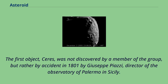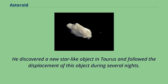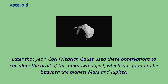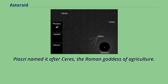The first object, Ceres, was not discovered by a member of the group, but rather by accident in 1801 by Giuseppe Piazzi, director of the Observatory of Palermo in Sicily. He discovered a new star-like object in Taurus and followed its displacement over several nights. Later that year, Carl Friedrich Gauss used these observations to calculate the orbit, which was found to be between Mars and Jupiter. Piazzi named it after Ceres, the Roman goddess of agriculture.